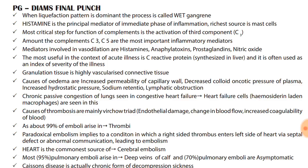Heart failure cells are seen in chronic passive congestion of lungs — these are hemosiderin-laden macrophages. Just remember, heart failure cells are seen in lungs, not liver. Causes of thrombosis are mainly Virchow's triad: endothelial damage, increased coagulability, and change in blood flow.